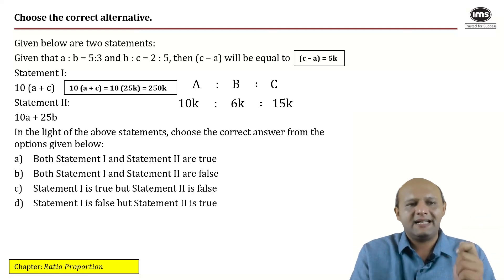The first one says 10 times a plus c which is incorrect because 10 times a would be 10 times 10 which is 100 plus 10 times c which is 150. So therefore that adds up to 250 times k which is not equal to c minus a.